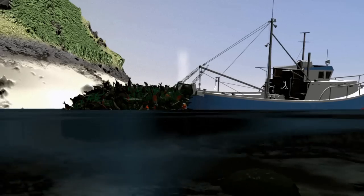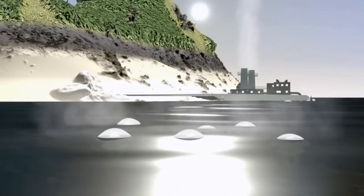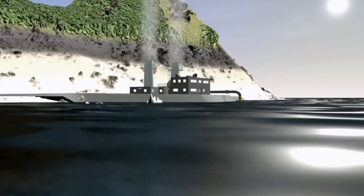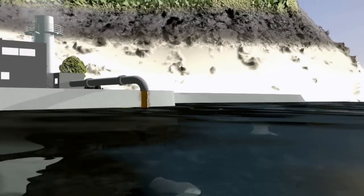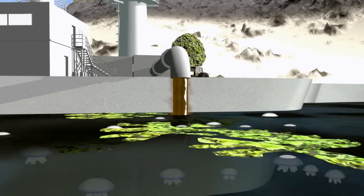including overfishing as predators are removed from the oceans, global warming which helps tropical species thrive, and excessive nutrient levels in coastal waters from fertilizer runoff and sewage which can kill fish but create conditions in which jellyfish thrive.